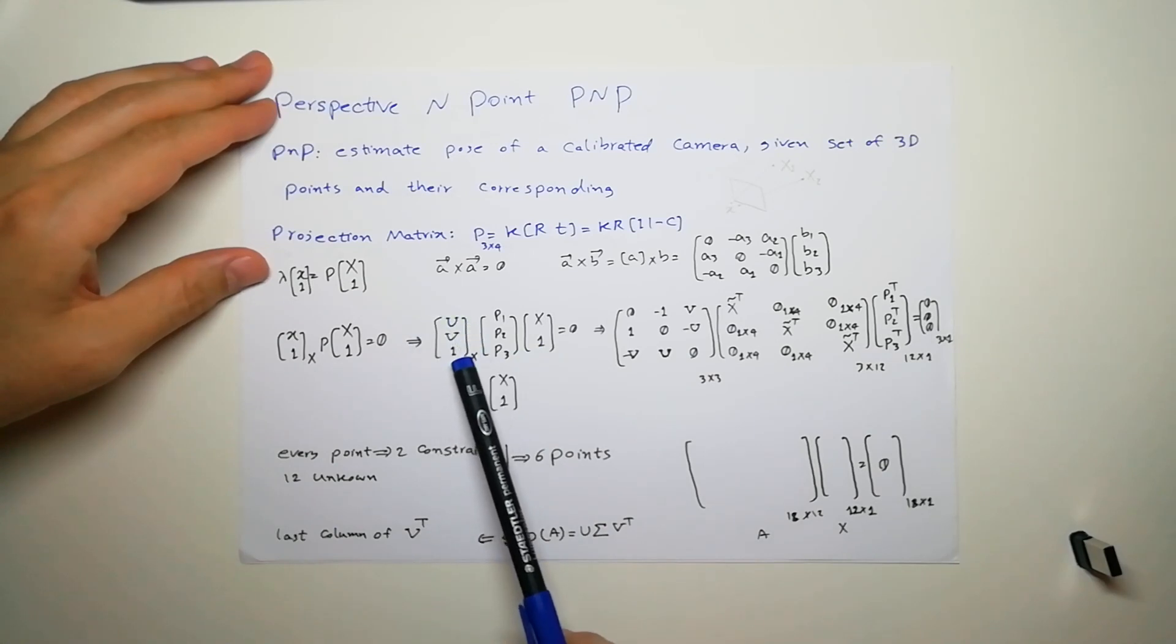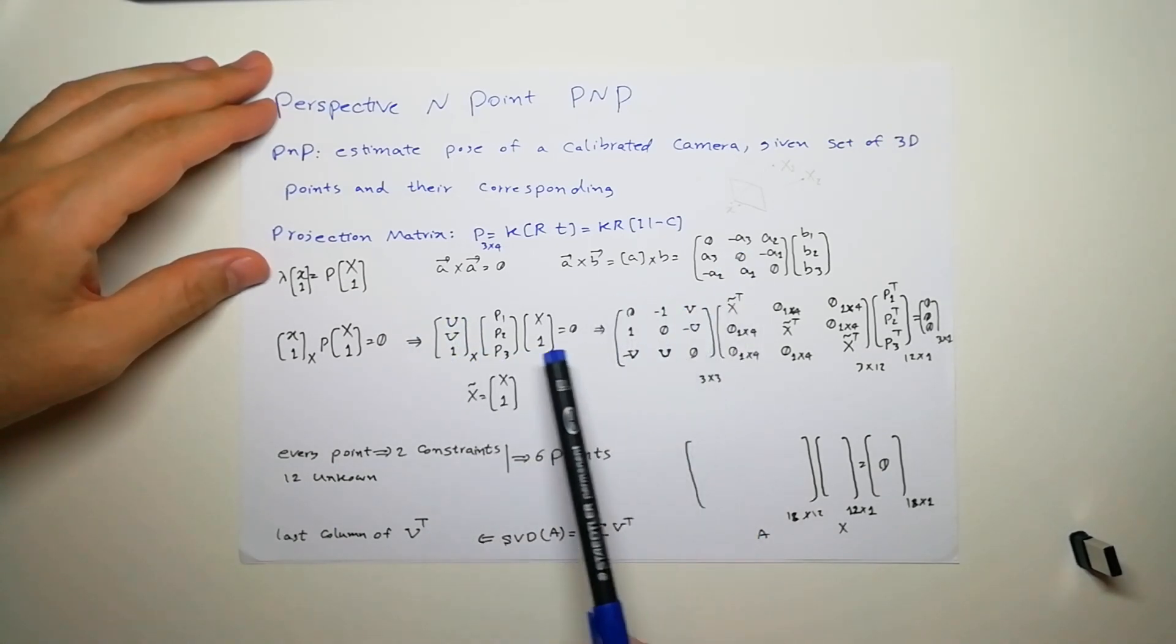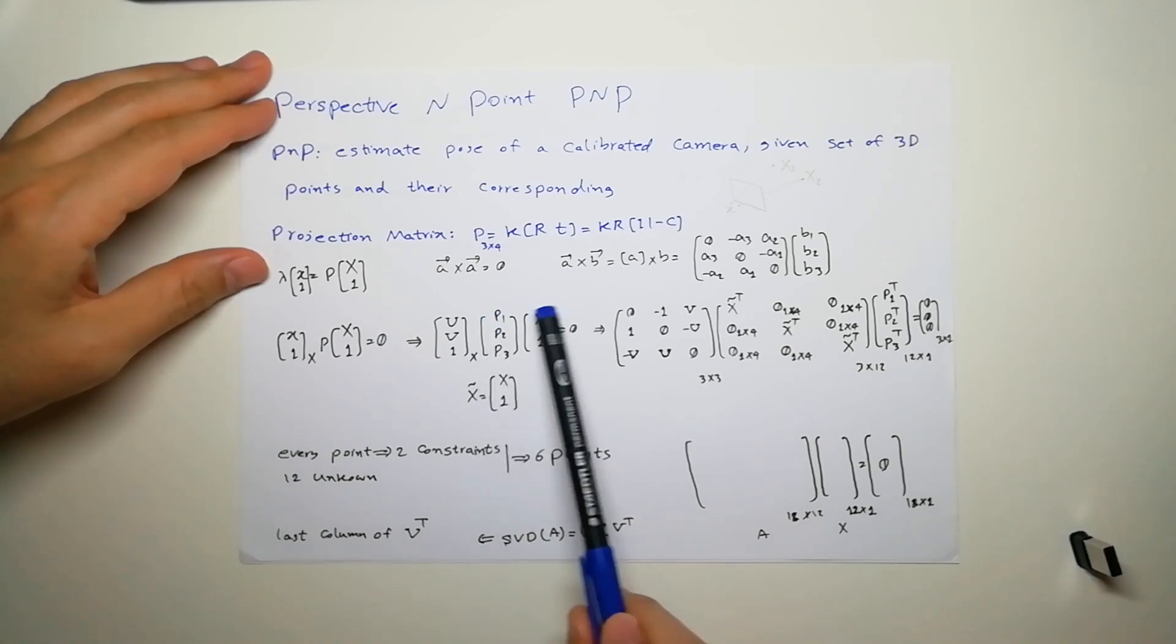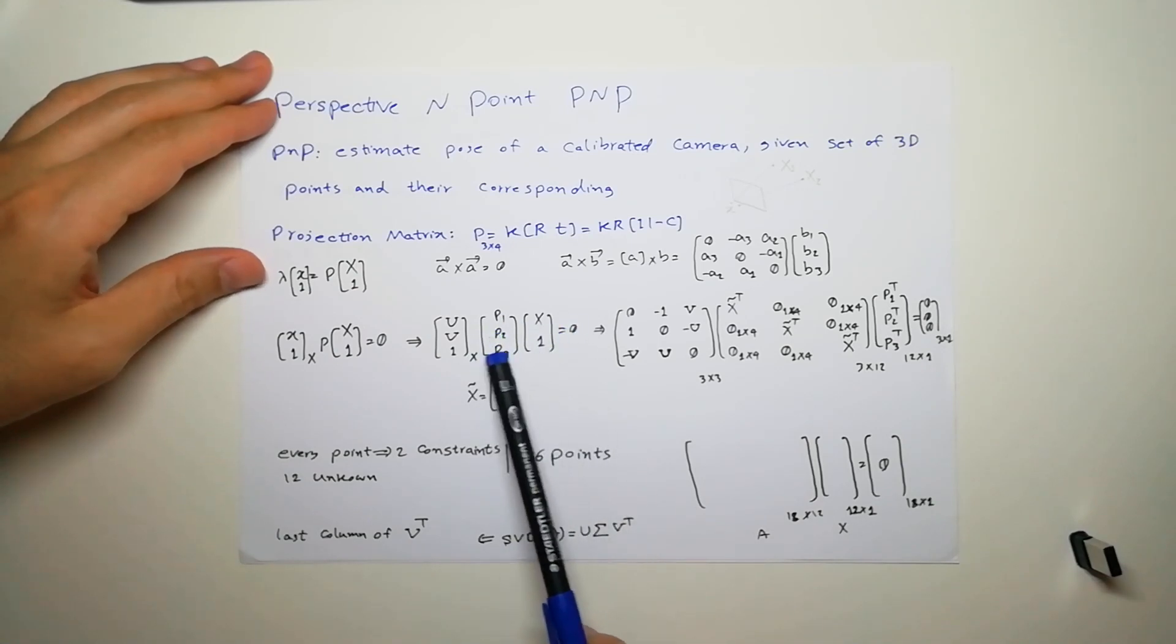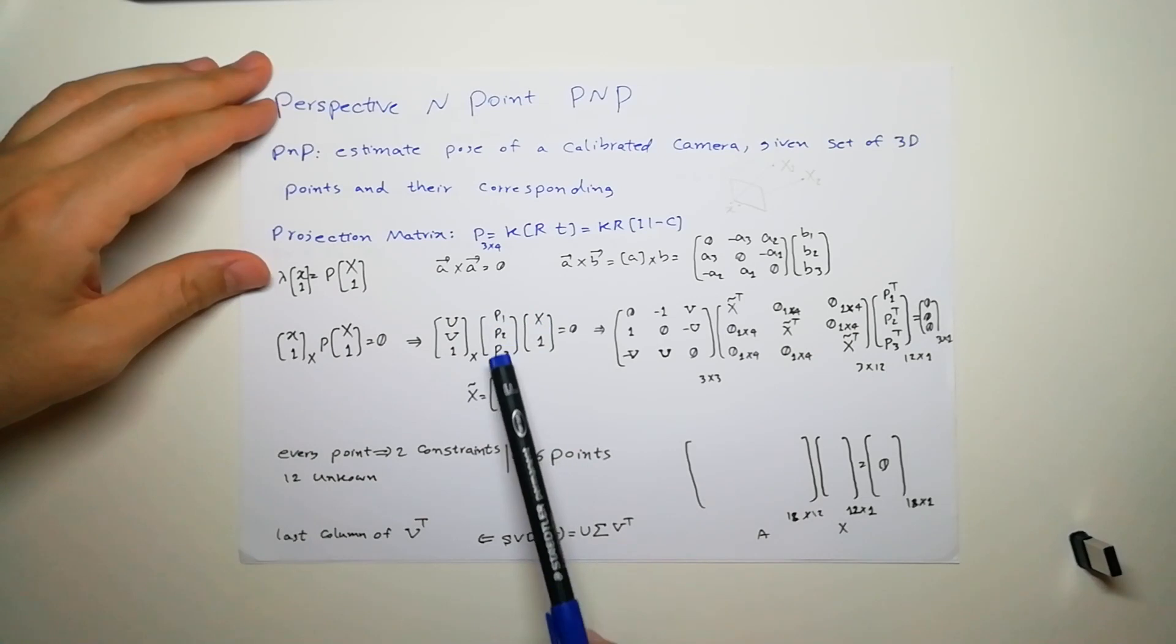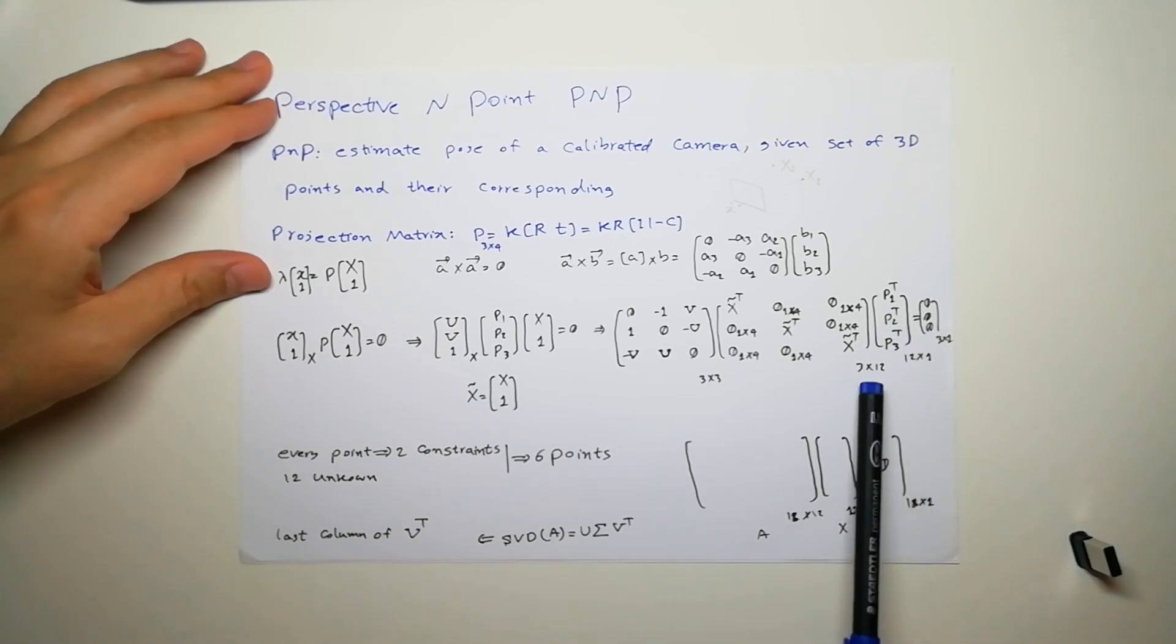I use this property here. If p1 is the first row, p2 second one, p3 the third row, if I massage this matrix a little bit I can write it in this form which is a 12 by 1 matrix, 12 rows and one column. And here we have a 3 by 12 matrix.